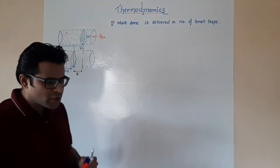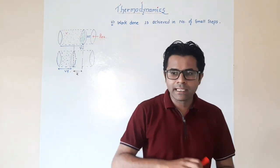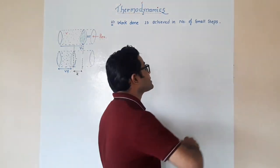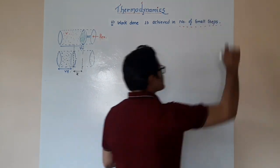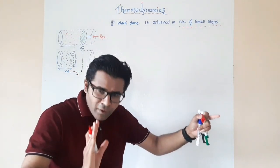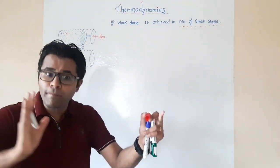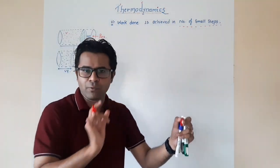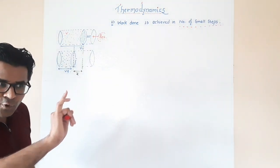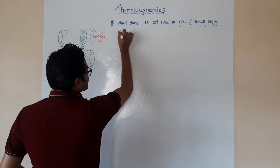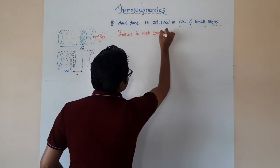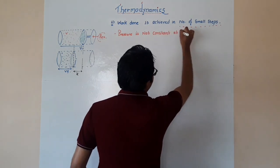So the work done in an irreversible process is W = −Pex·ΔV. Now, in the next case, the condition P = Pex is achieved, but this time it is achieved in a number of smaller steps. That means at every single step we compress by a smaller amount.